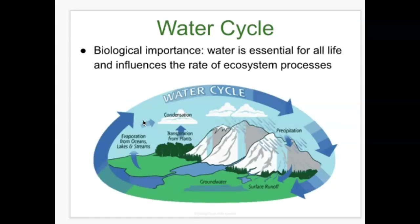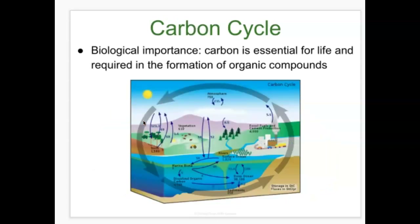The water cycle, or hydrologic cycle, has biological importance because water is essential for all life and influences the rate of ecosystem processes. Its components include evaporation, condensation, transpiration — the special type of evaporation from plants through open stomata — runoff, precipitation, and groundwater. The carbon cycle is biologically important because carbon is essential for life: we are carbon-based organisms, and carbon is required for forming organic compounds — the macromolecule groups including carbohydrates, fats and lipids, amino acids and proteins, and nucleic acids.